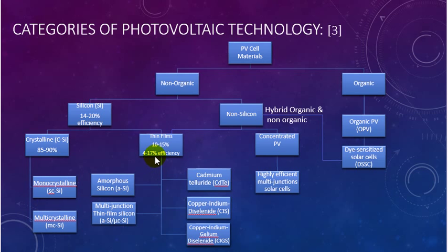For the thin films, we can categorize five principal types: amorphous silicon, multi-junction thin film silicon, cadmium telluride, copper indium diselenide, and copper indium gallium diselenide. For the organic, we can classify it as organic photovoltaic or dye-sensitized solar cell. This one is hybrid organic and non-organic.